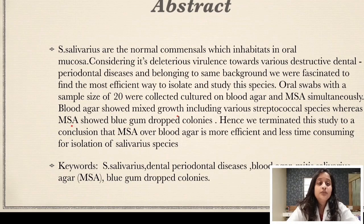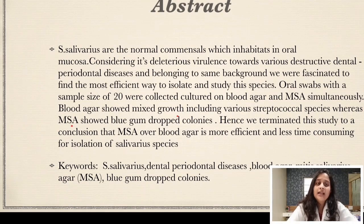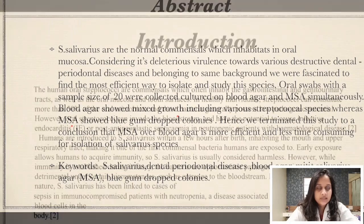A sample size of 20 was considered. Oral swabs were collected and cultured both on blood agar and MSA, i.e. Mitis Salivarius Agar, with 1% of potassium tellurite simultaneously, and the results were obtained. Blood agar showed mixed colonies, while on MSA, blue gumdrop colonies were obtained.